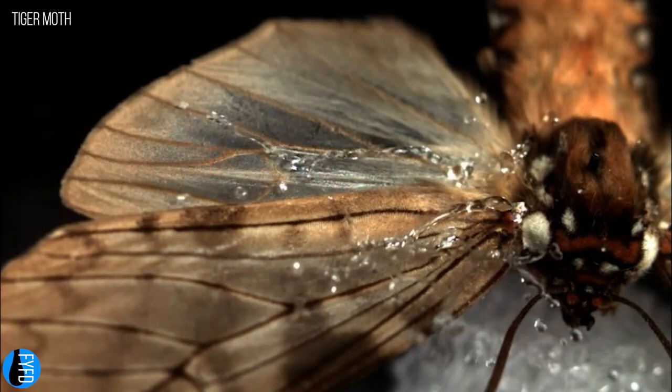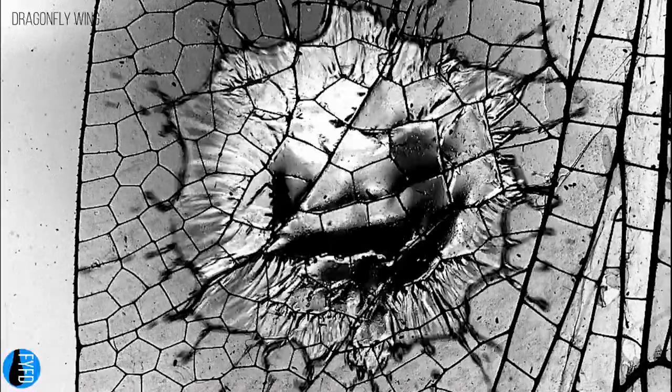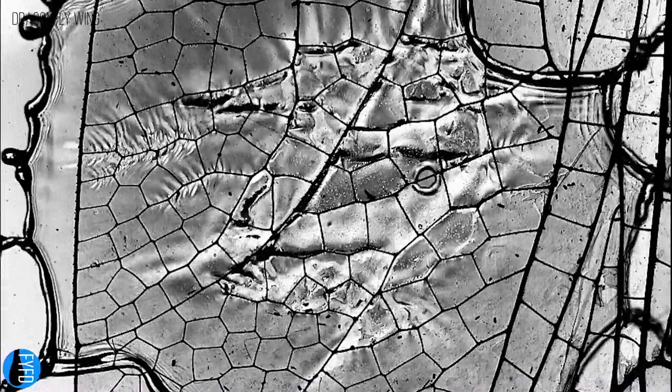Many species solve this problem using small-scale structures on their feathers and scales that help them shed water. To see how this works, let's look at some simplified artificial surfaces.